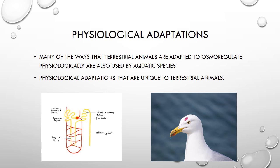Here we have an original illustration of a nephron, the smallest unit of the kidney, where you can find the loop of Henle. Also, marine reptiles, including birds, possess nasal salt glands, allowing them to consume salt water and excrete the excess amounts of salt while retaining the water. We drew a representation of a salt gland on an image of a seagull to demonstrate where they are located.